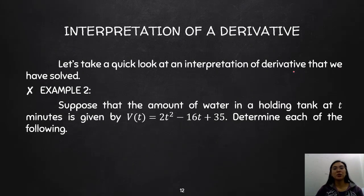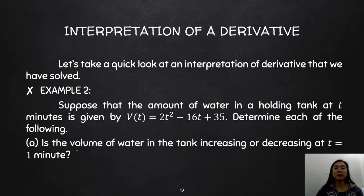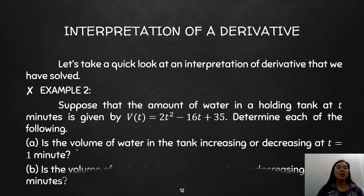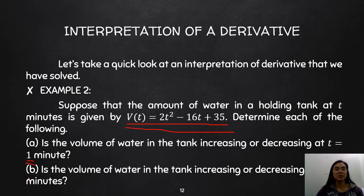Let's take a quick look at an interpretation of the derivative we just solved. Suppose that the amount of water in a holding tank at t minutes is given by V(t) = 2t² − 16t + 35. We are to determine: is the volume of water increasing or decreasing at t = 1 minute, and at t = 5 minutes? This is an application of derivative — at that particular instant, we determine whether the water volume is increasing or decreasing.